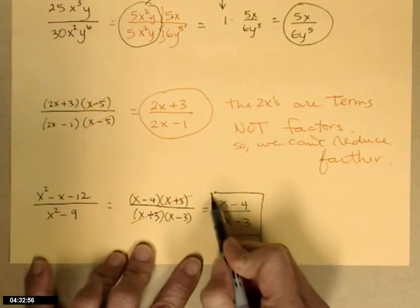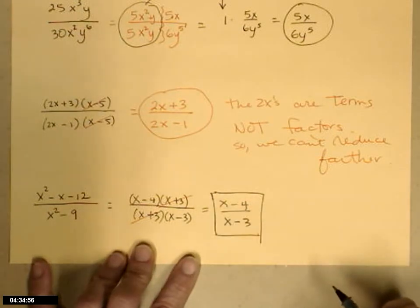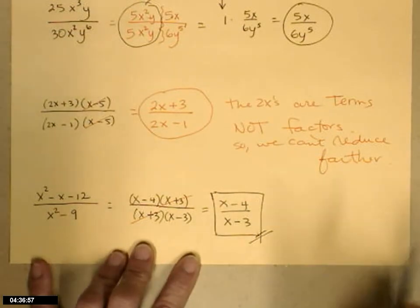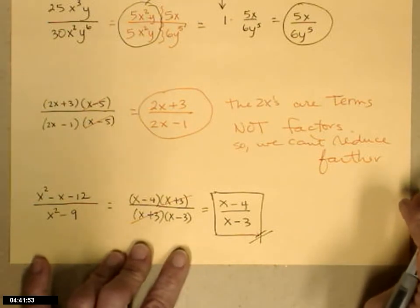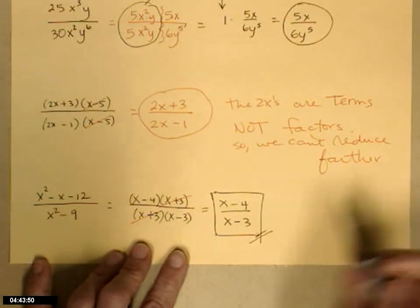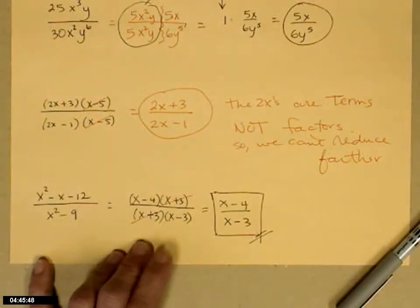Again, this time our x's are terms, not factors, I can't reduce farther. This is the answer. And yes, it is wrong if you try to go farther. So 4 thirds is a wrong answer. This is the only correct answer. Good luck!